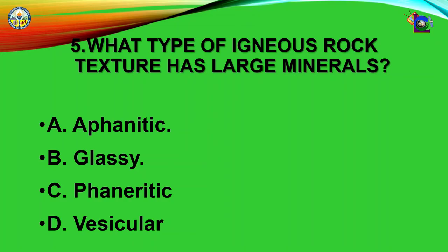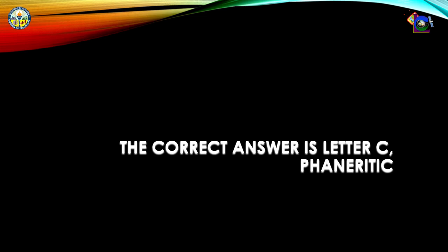Question number 5: What type of igneous rock texture has large minerals? A. Aphanitic, B. Glassy, C. Phaneritic, D. Vesicular. The correct answer is letter C — Phaneritic.